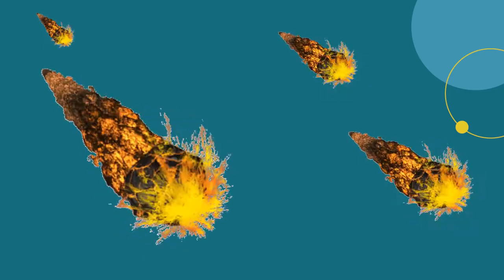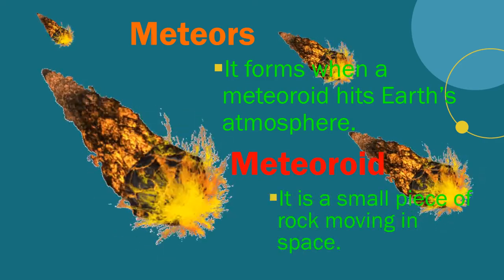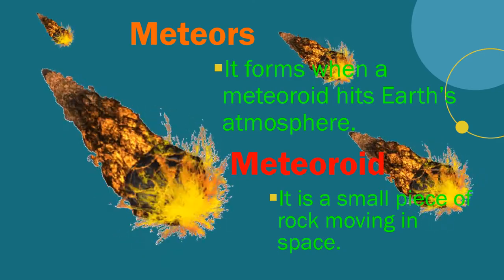Let's move on to the meteors. Meteor is formed when a meteoroid hits Earth's surface. What is meteoroid? Meteoroid is a small piece of rock moving in space. A very bright meteoroid is called a fireball.